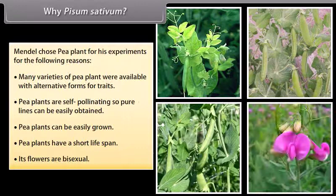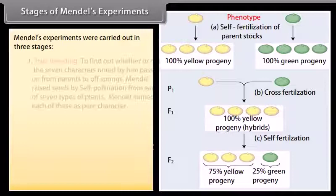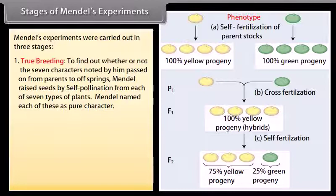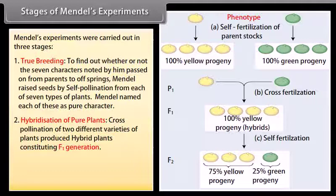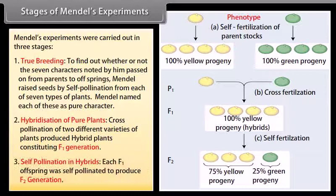Stages of Mendel's Experiments. Mendel's experiments were carried out in three stages. First, true breeding: to find out whether the seven characters passed on from parents to offspring, Mendel raised seeds by self-pollination from each of seven types of plants and named each a pure character. Second, hybridization of pure plants: cross-pollination of two different varieties produced hybrid plants constituting the F1 generation. Third, self-pollination in hybrids: each F1 offspring was self-pollinated to produce the F2 generation.